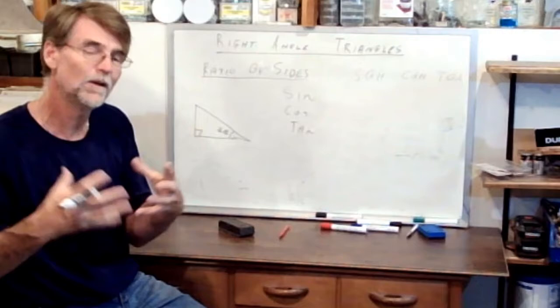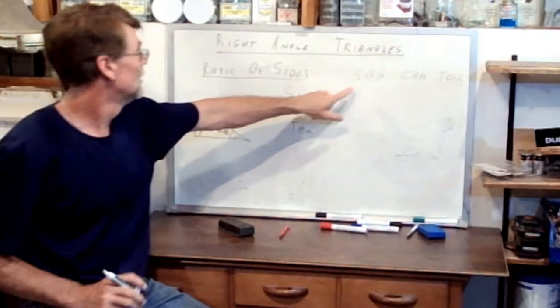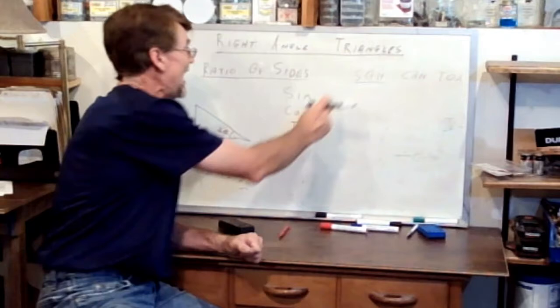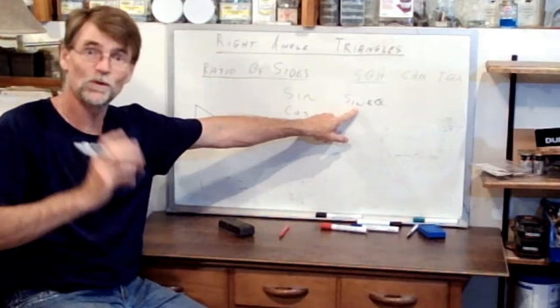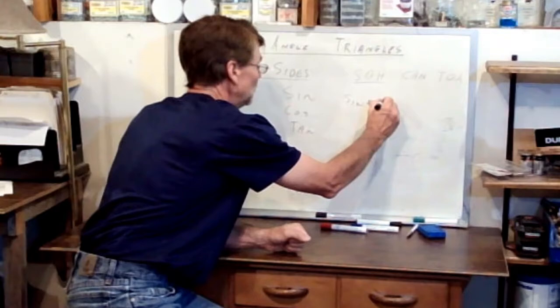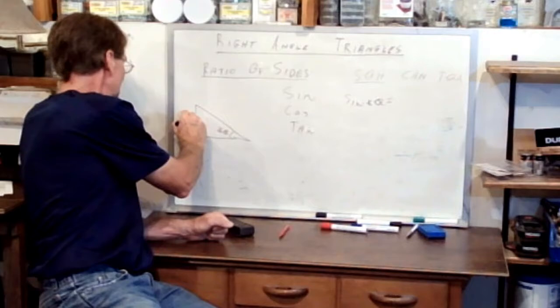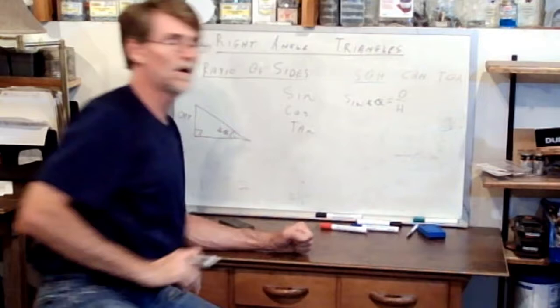In another video I'll talk about what sine, cos, and tan actually mean and what they're calculating. But let's just get through the math for right now. We're first going to focus on the letters SOH. S is for sine — the sine function of angle theta. The sine of angle theta equals O over H, which is the opposite over the hypotenuse.